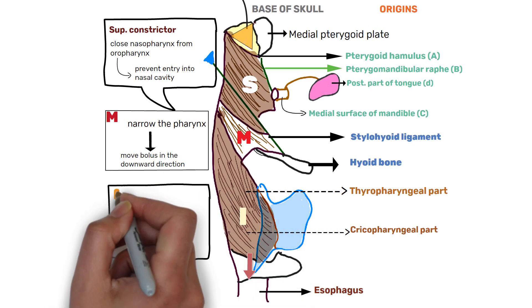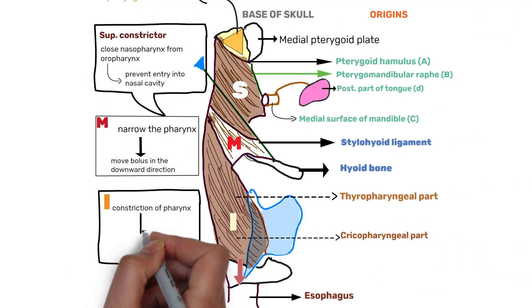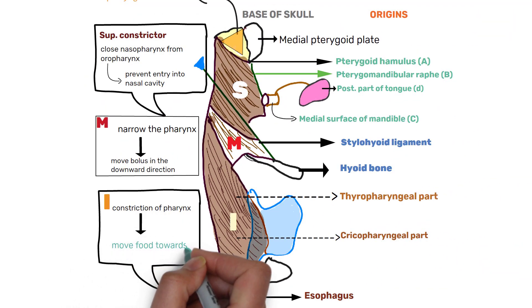It carries out the constriction of pharynx during swallowing to move the food towards the esophagus. Its lower part continues as esophagus and forms the upper esophageal sphincter.